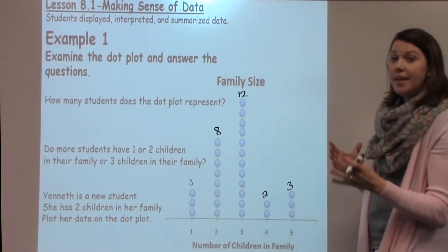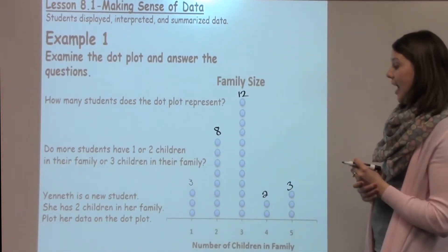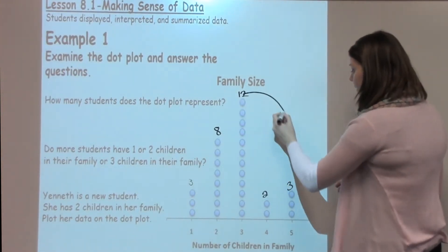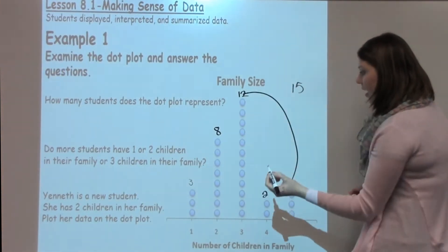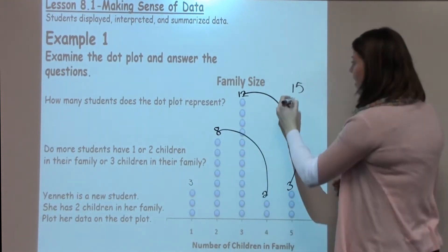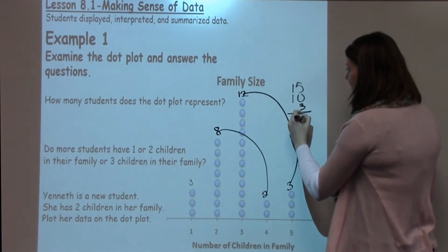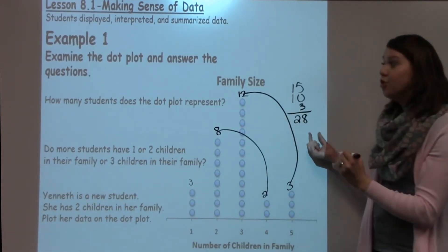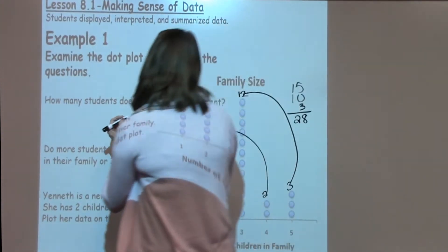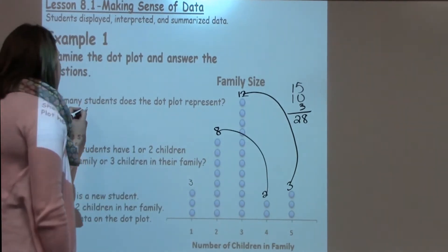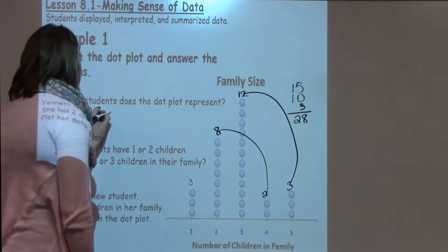I'm going to try to do some fast math, making groups of numbers that I can add quickly. I know twelve plus three is fifteen. I know eight plus two is ten, and then I've got three. When I add these all up, I have twenty-eight students. So how many students does the dot plot represent? It represents twenty-eight students.